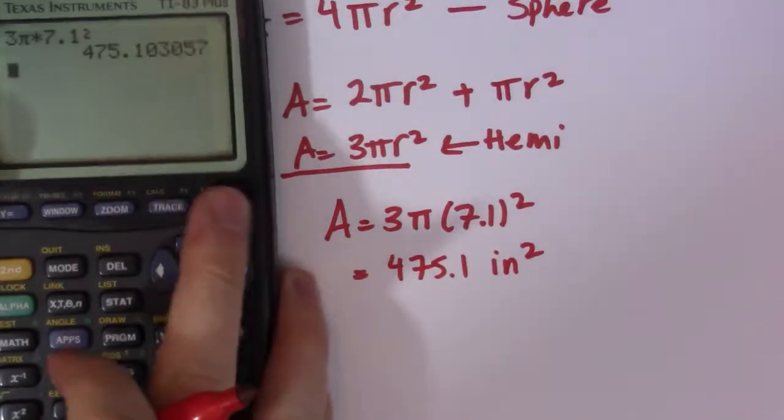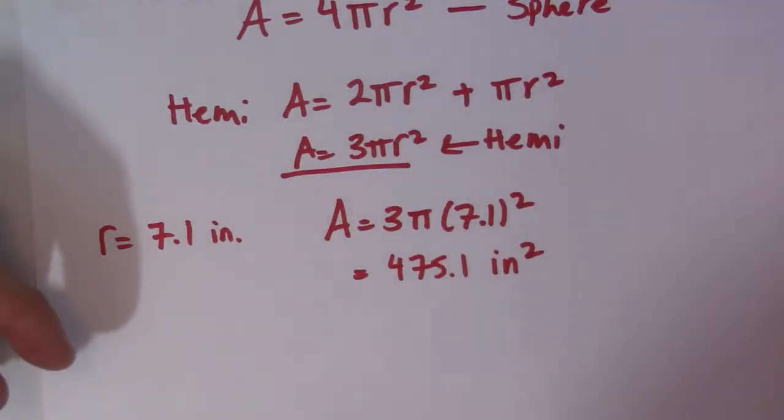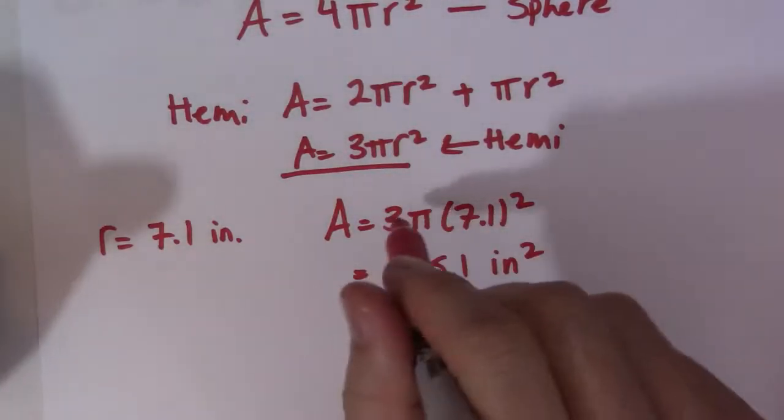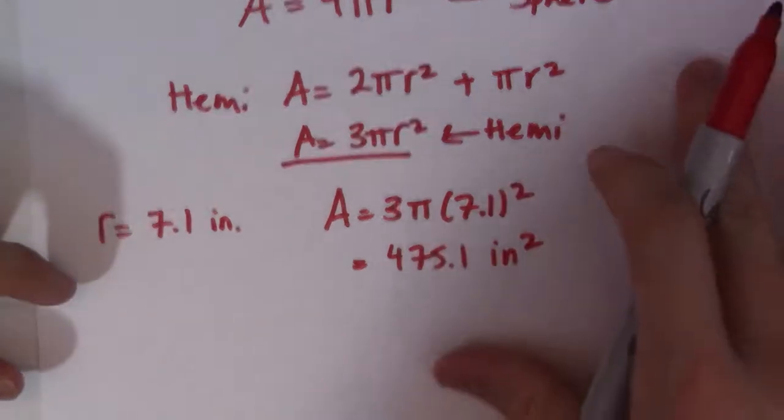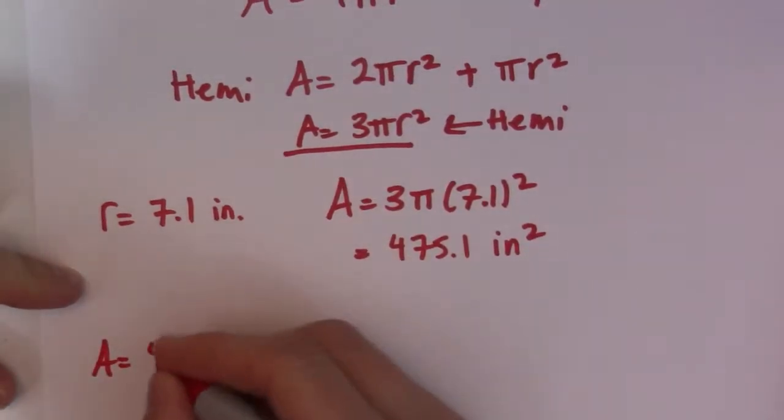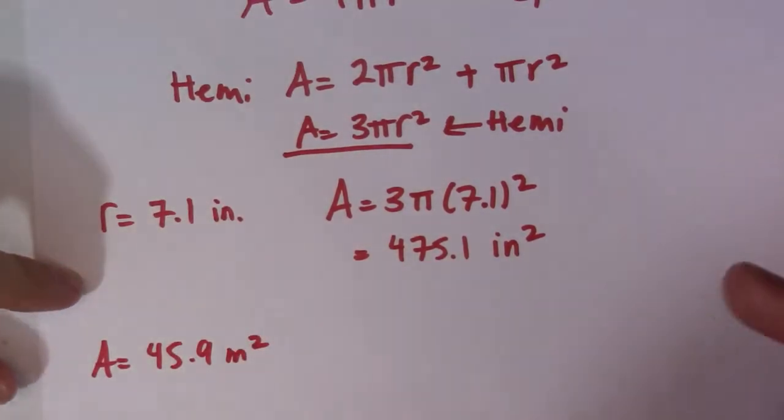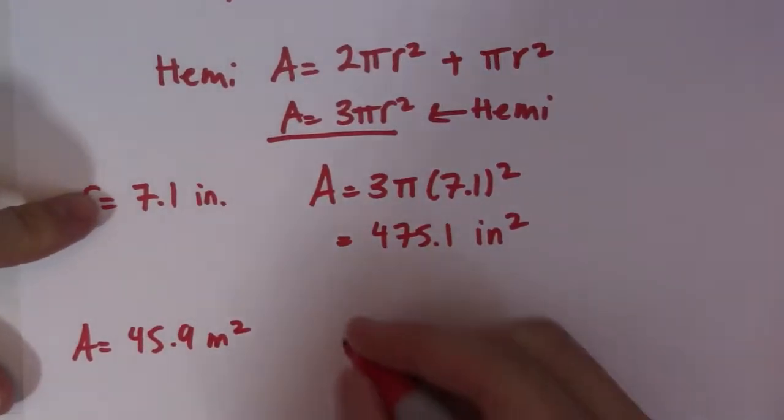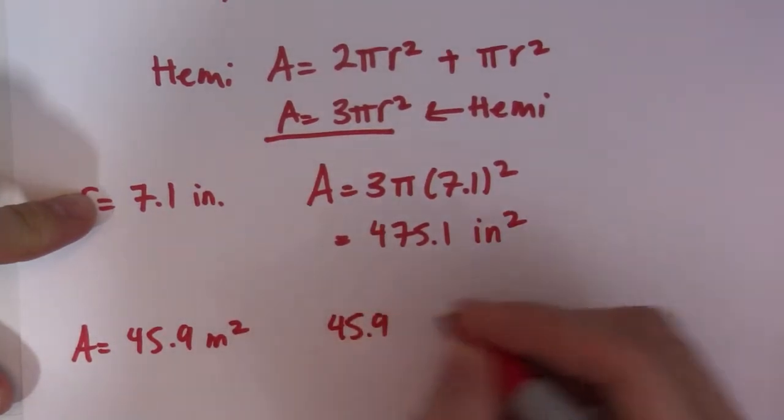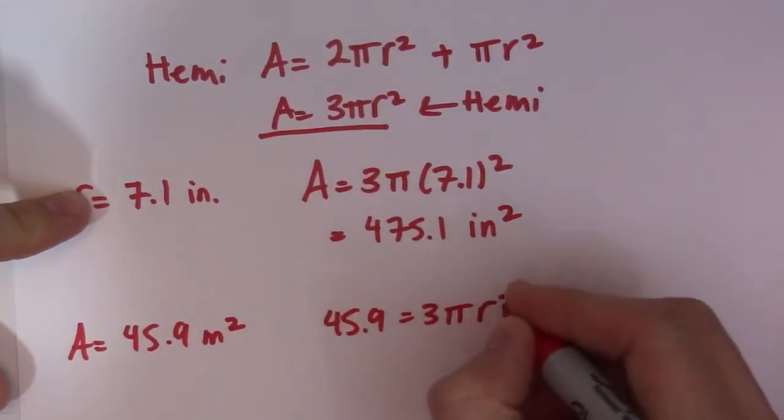Now the other scenario is when I might have something backwards. Now I use my pi button guys, you can use 3.14 if you want to. If you have area, let's make up a number, 45.9 meters squared, and you need to find the radius of that hemisphere. So if I have 45.9, I let it equal 3πr².